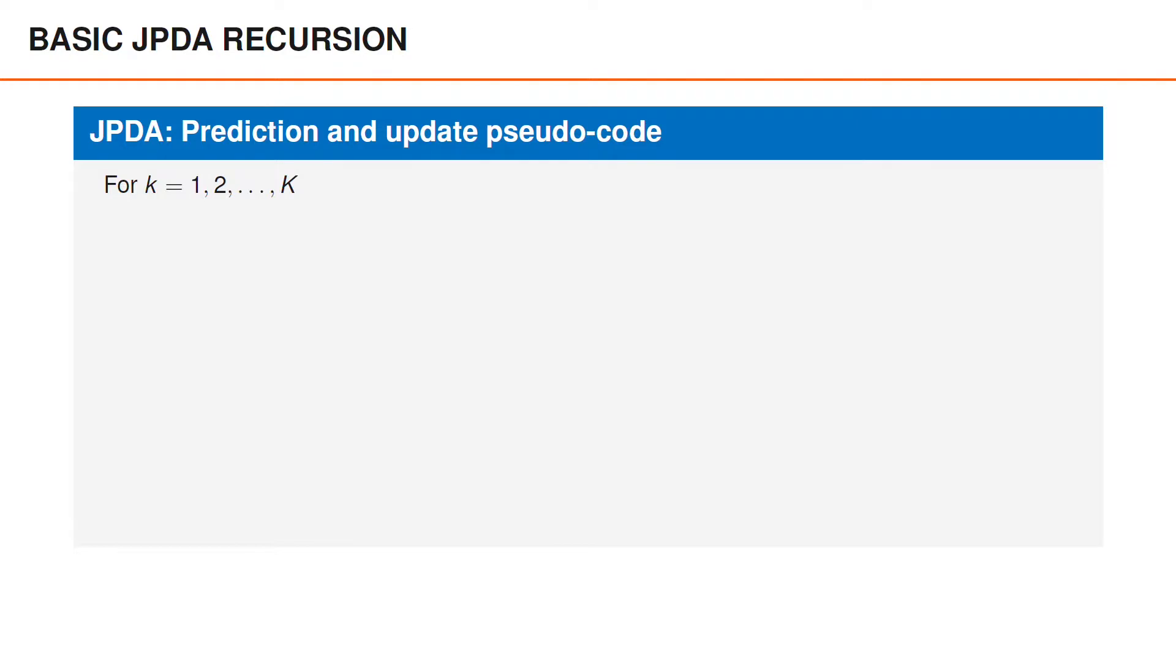The basics of the JPDA recursion is that for each time step, again, we start with a Chapman-Kolmogorov prediction for each object. If we have Gaussian object densities and linear Gaussian transition density, then this comes down to the Kalman filter prediction.